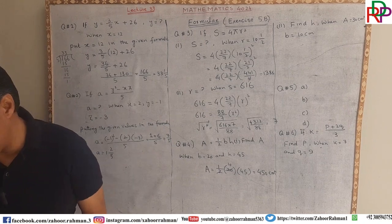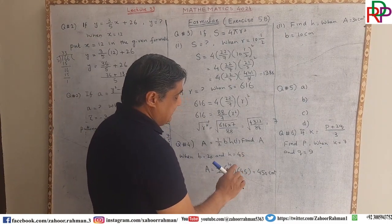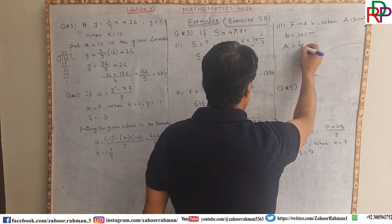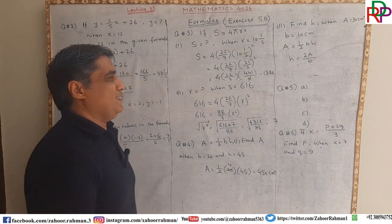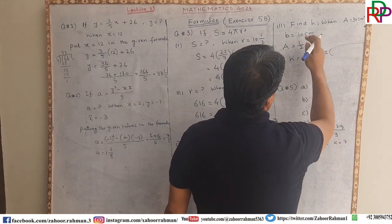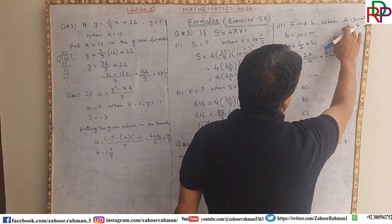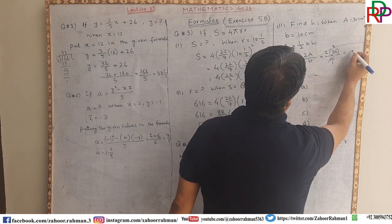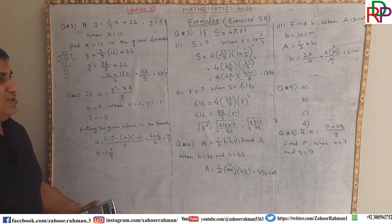The unit should be in square, so since the values are given in centimetres the answer is 450 centimetres squared. The next part says: find h. We make h the subject: from A equals 1 over 2 b h, we get h equals 2A divided by b. Putting the values, A equals 10 and b equals 10, so h equals 2 times 10 divided by 10, giving 6 centimetres — note height is in centimetres, not square centimetres.